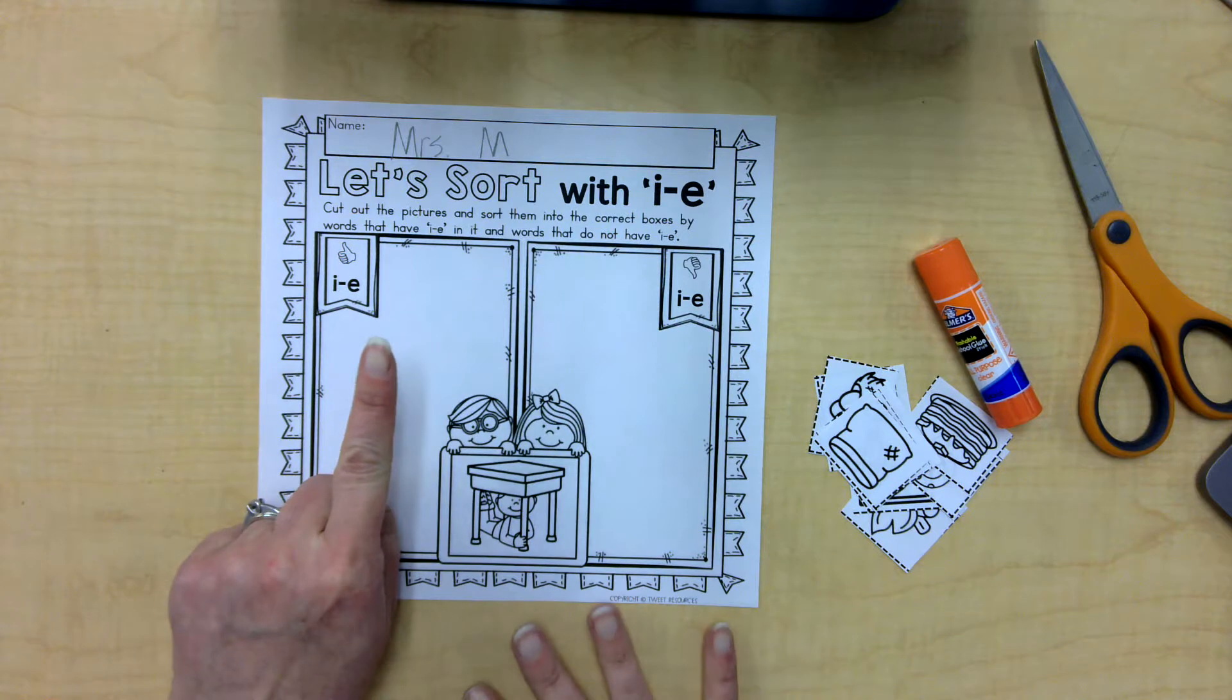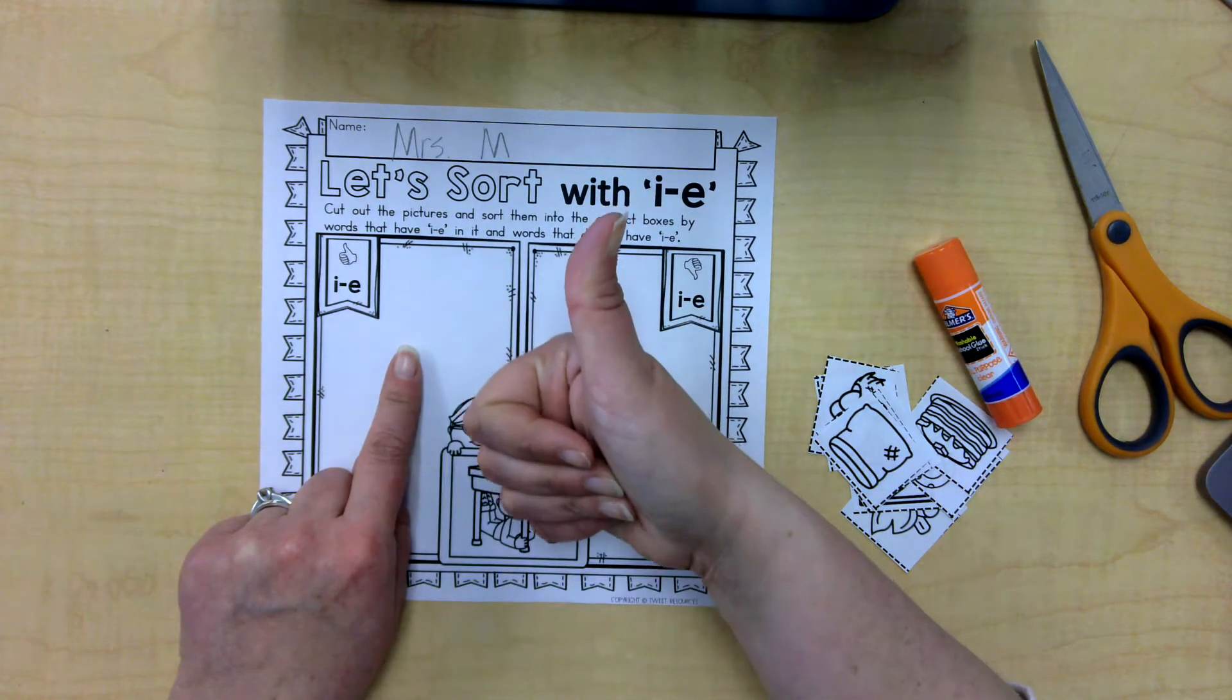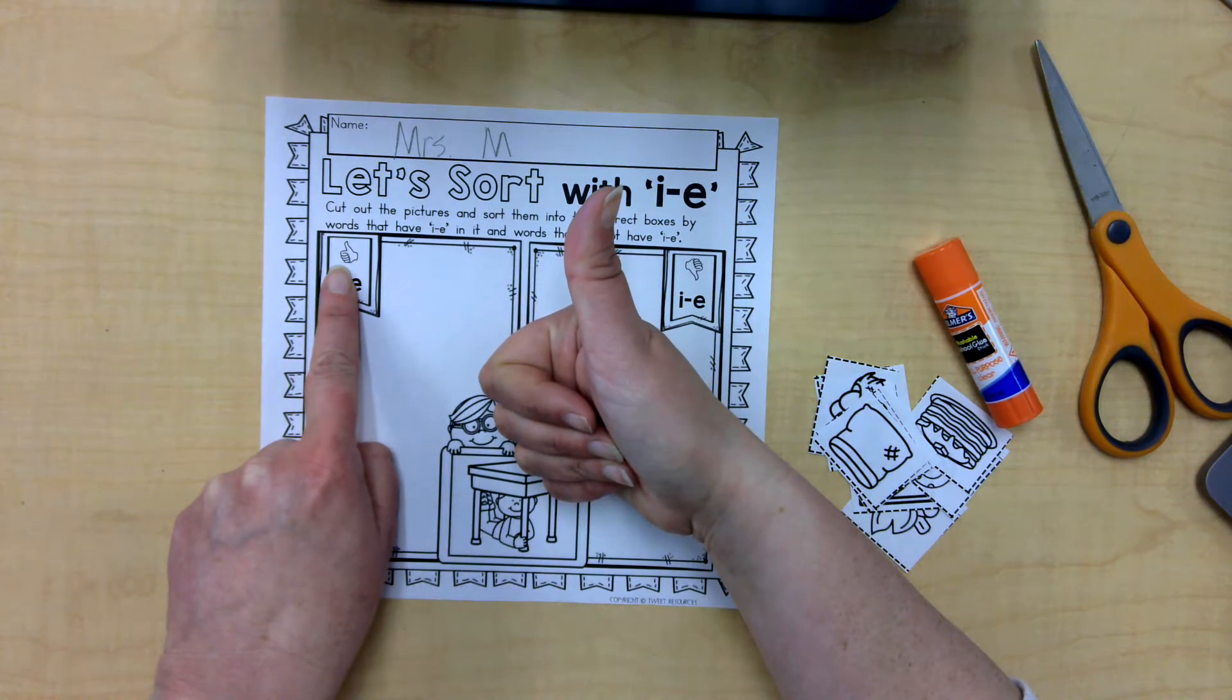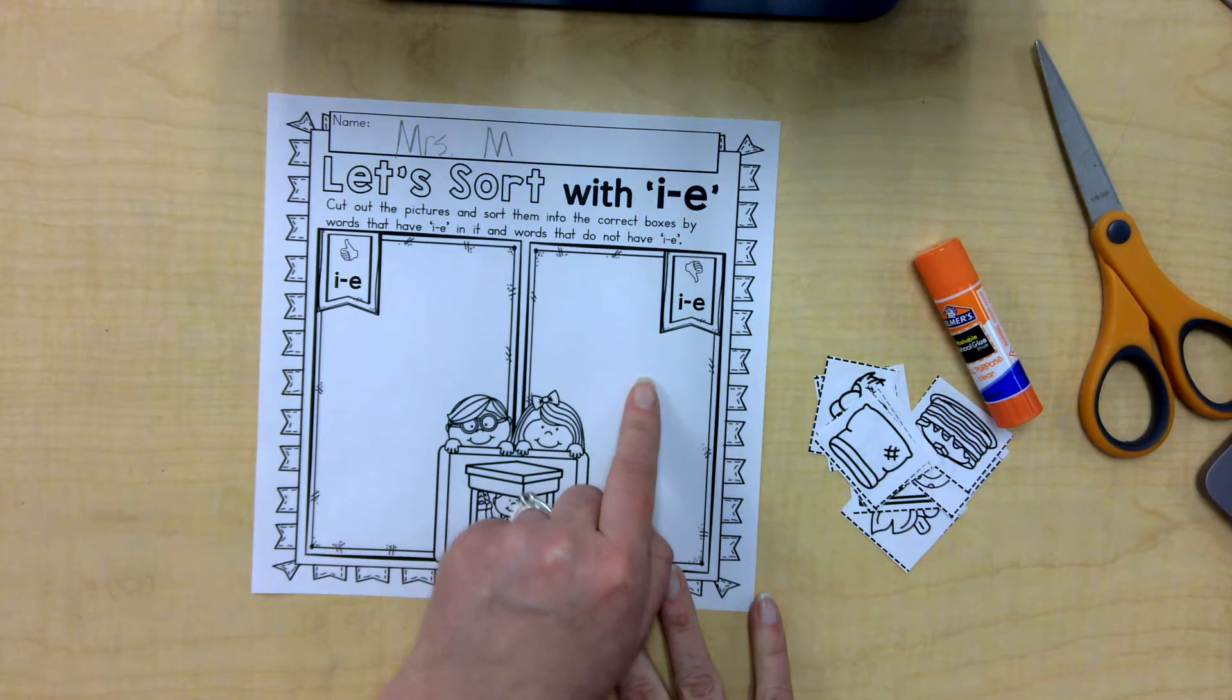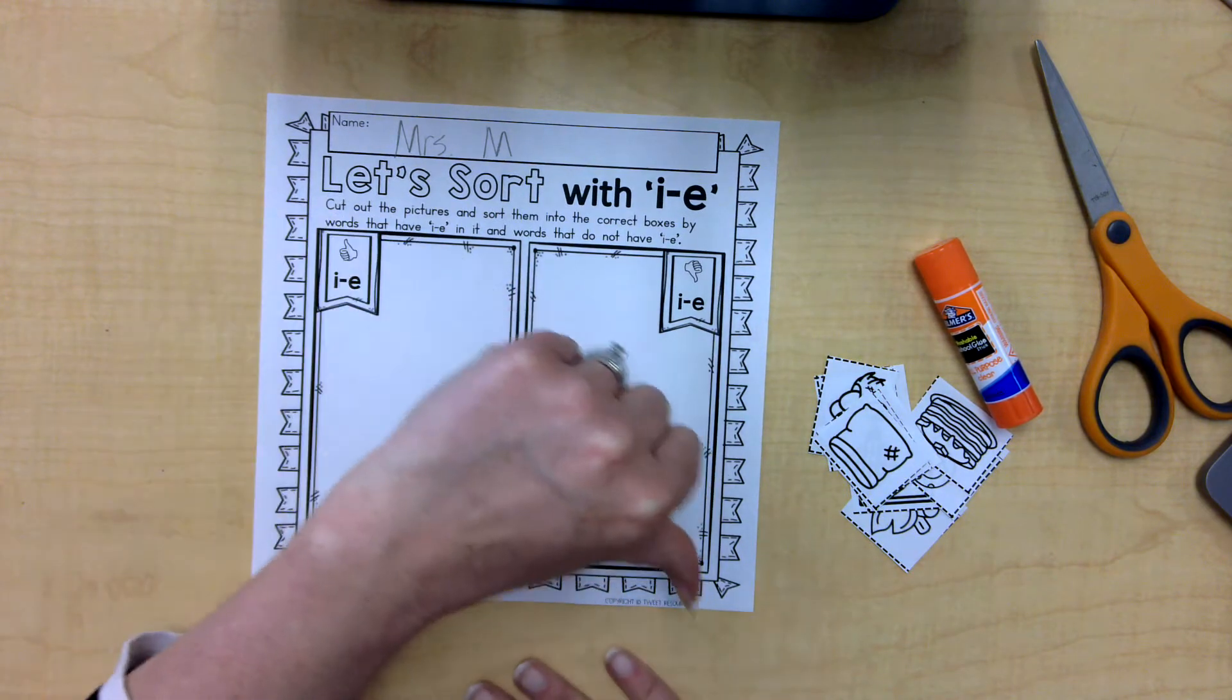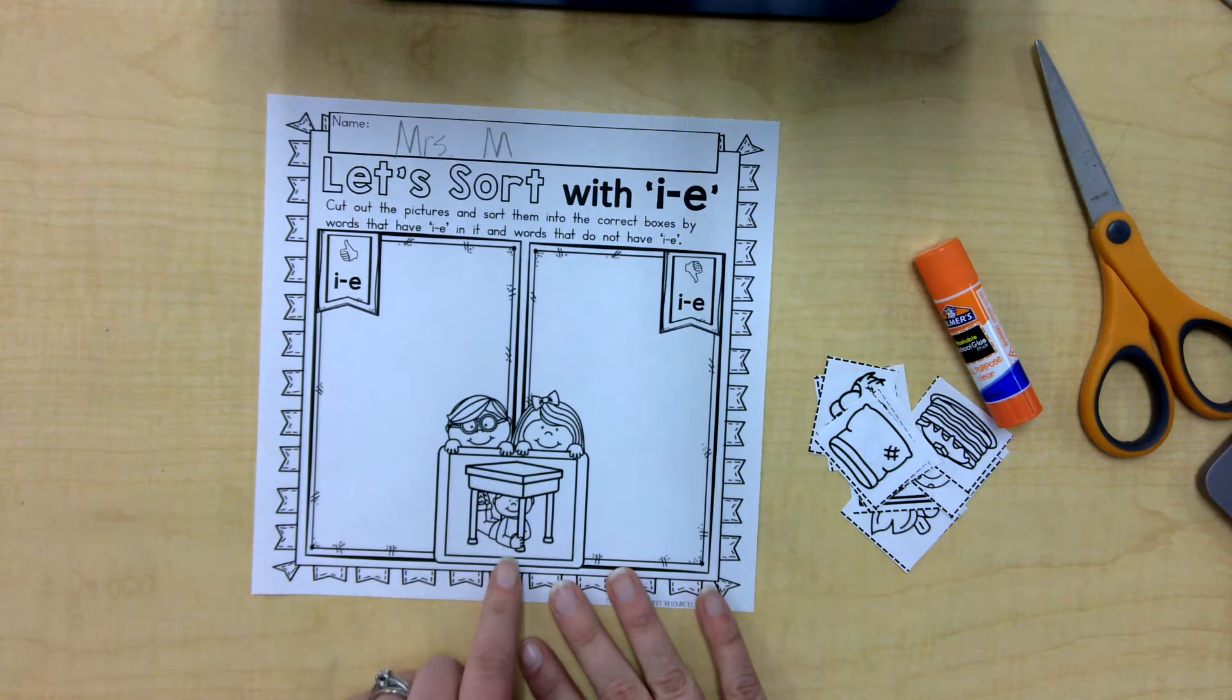Okay, so on this side of the paper, I want to put all of the pictures that do have a long I sound. See the thumbs up? That's their yes. Long I sound. Now on this side of the paper, no long I sound. Now, to help me remember, there's a picture of a boy that's holding on tight. Wow, look at, he's holding on tight to that table. He's got to hold on tight.